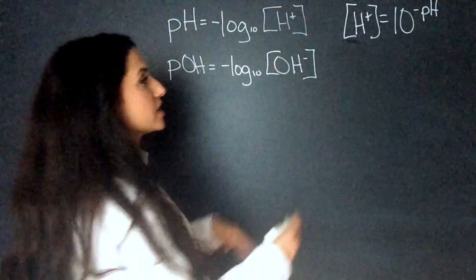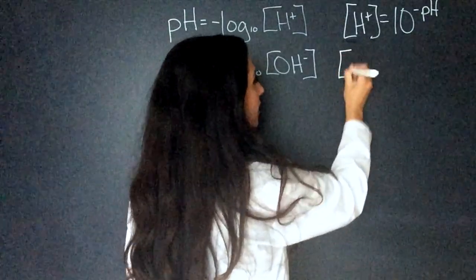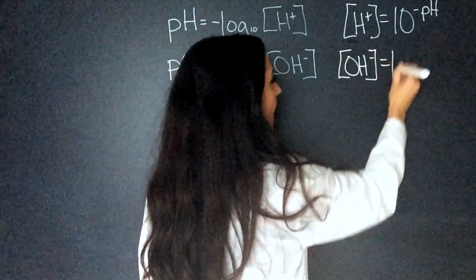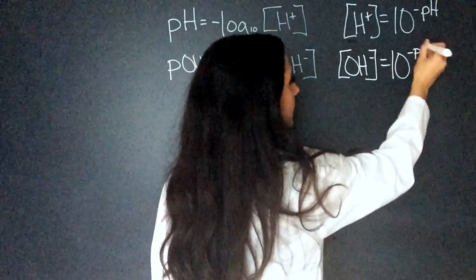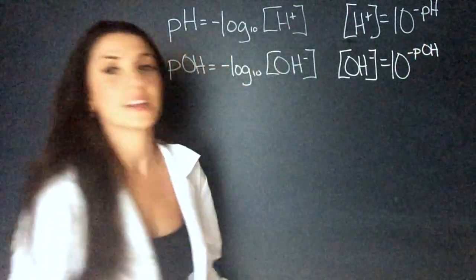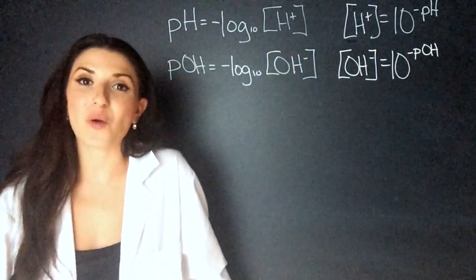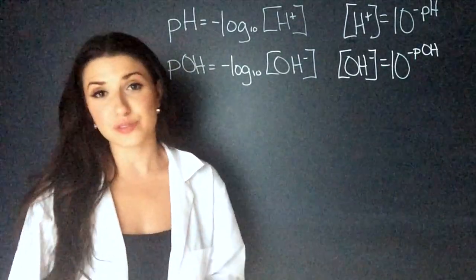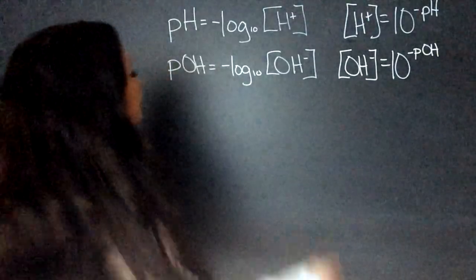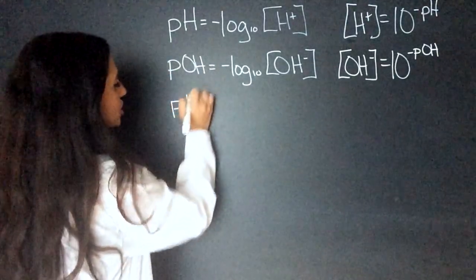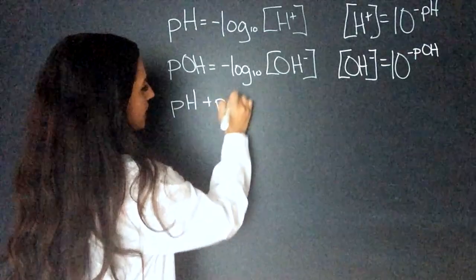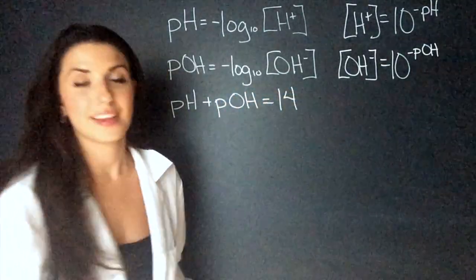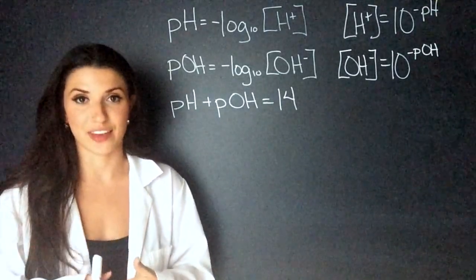Then to rearrange this equation, to find the concentration of hydroxide ions, we would just do 10 to the power of the negative pOH instead of pH. Now, how can we put these together? The third and most useful equation to know is that the pH plus pOH equals 14. And that is how we can bridge these two together.